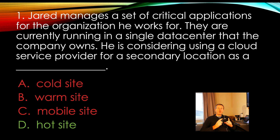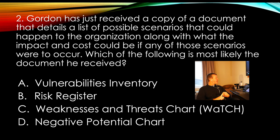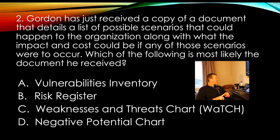Hopefully everyone did well there. Let's move on to question number two. Gordon has just received a copy of a document that details a list of possible scenarios that could happen to the organization, along with what the impact and cost could be if any of those scenarios were to occur. Which of the following is most likely the document he received? Is this a vulnerabilities inventory, a risk register, a weaknesses and threats chart, or a negative potential chart?